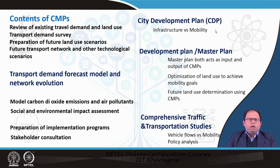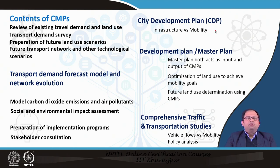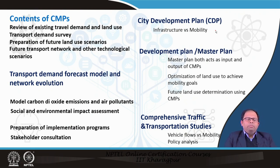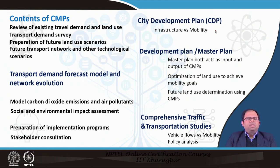The different contents of a CMP: first, review the existing travel demand and land use of an urban area. Then conduct a travel demand survey to ascertain the traffic load in different corridors, what kinds of trips people make, how many trips they make, and what distance they travel. Then preparation of future land use scenarios to understand how the city is growing — input may come from development plans. And future transport network and technological scenarios, which may include new transit lines or new modes.